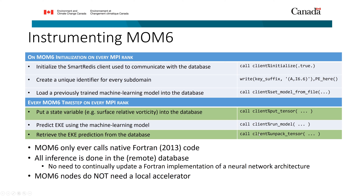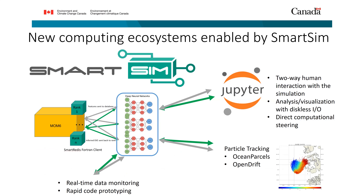All inference is done on the remote database, meaning you don't have to continually update a Fortran implementation of a neural network — you just rely on TensorFlow running on the Redis AI database. This also means MOM6 nodes don't need a local accelerator, which is important because most climate codes are CPU-based. It would be very inefficient if every node also had a GPU accelerator if we were only using it 1% of the time.